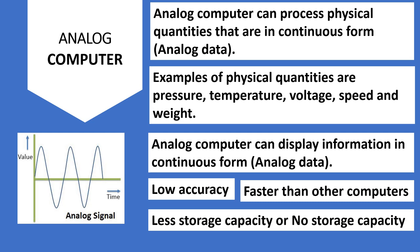An analog computer can display information in continuous form. It has low accuracy but is faster than other computers. It has less storage capacity or no storage capacity.